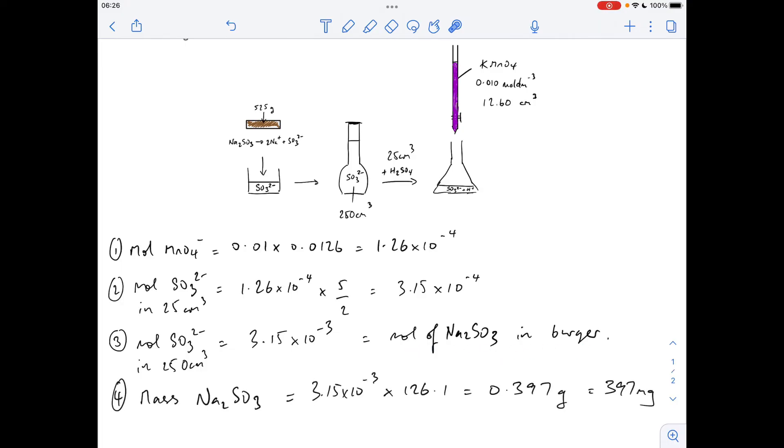So to work out the mass of sodium sulphite that's in the burger, we've got to multiply the moles by the MR of sodium sulphite. So we get 0.397 grams. We're going to convert that to milligrams, so multiply by 1,000, 397 milligrams. And then finally,